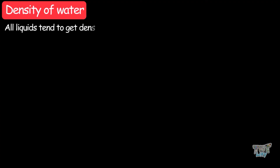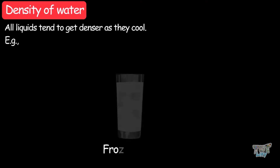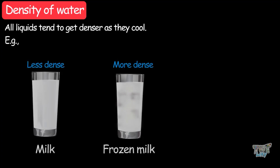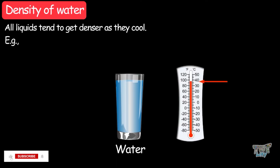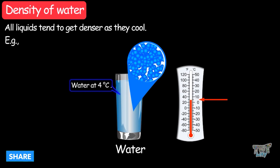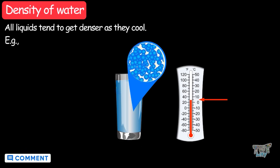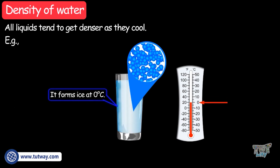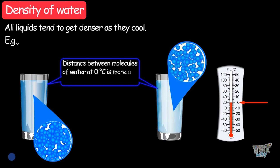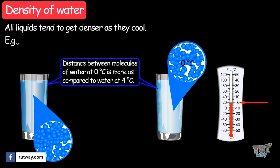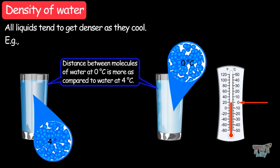All liquids tend to get denser as they cool. For example, frozen milk is more dense than liquid milk. But in the case of water, it's not true. As we start cooling, molecules come closer until water reaches its temperature of 4 degrees Celsius. Afterwards, as the cooling continues, the distance between the molecules of water starts to increase until it forms ice at 0 degrees Celsius. The distance between the molecules of water at 0 degrees Celsius in the ice form is more than the distance between molecules of water at 4 degrees Celsius.